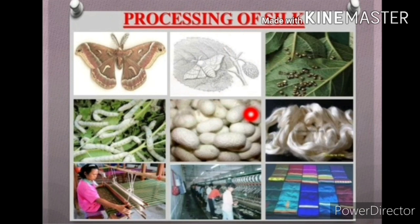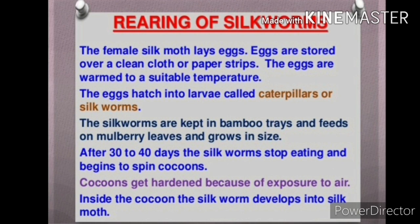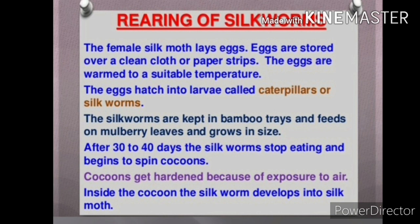Rearing of silkworms: A female silk moth lays eggs. The eggs are stored over a clean cloth or paper strips. The eggs are warmed to a suitable temperature. The eggs hatch into larvae called caterpillars or silkworms. The silkworms are kept in bamboo trays and fed on mulberry leaves. They grow in size, and after 13 to 14 days the silkworm stops eating and begins to spin a cocoon.